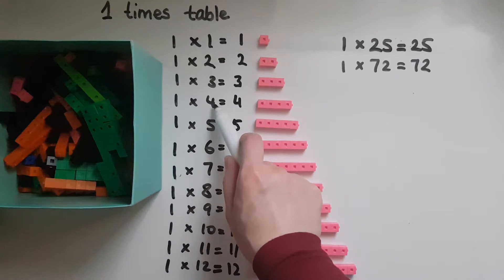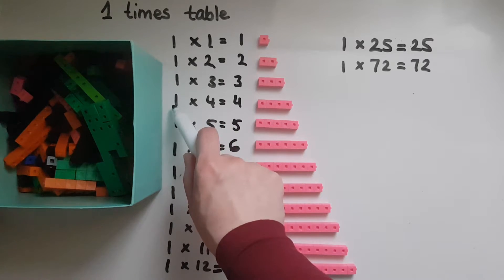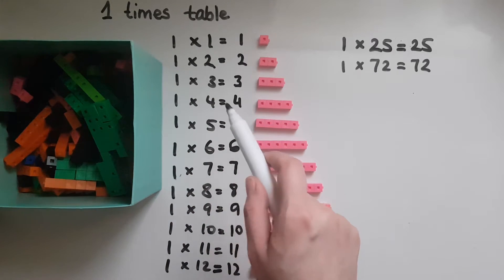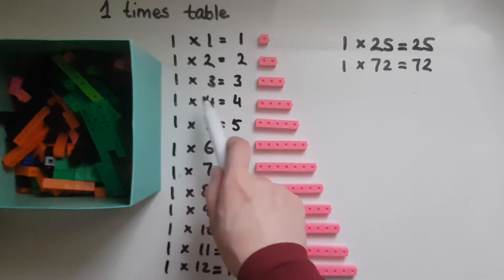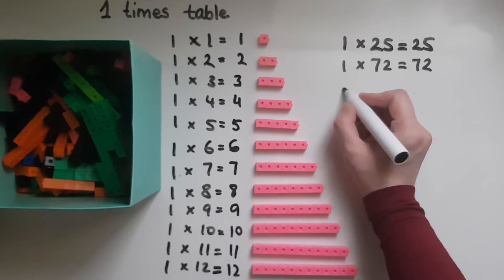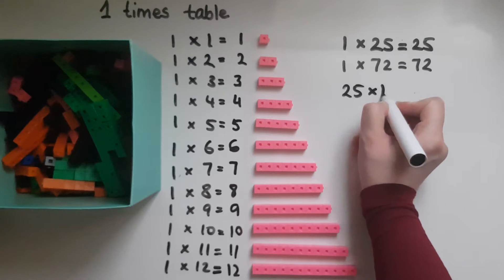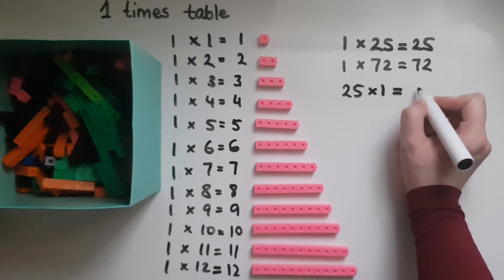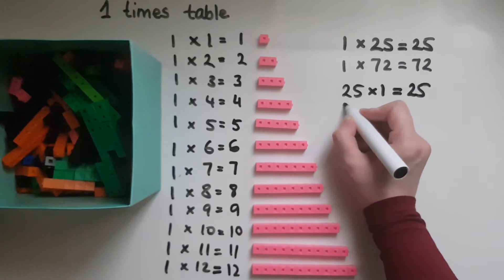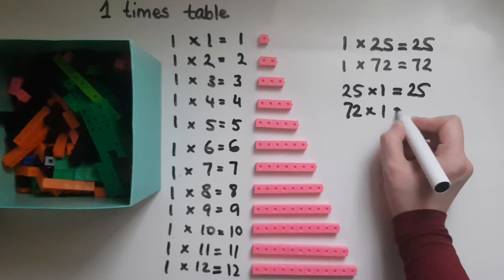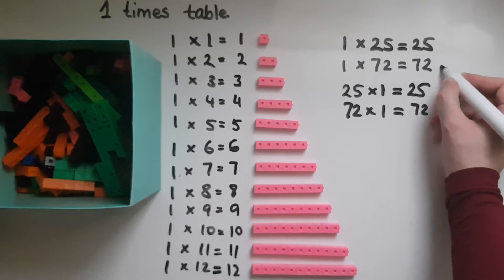Go four times to the shop, get one item each time, I'm gonna bring home four items. So the order is not really important. So I could do 25 times one and it's still gonna give me 25. 72 times one and it's gonna give me 72.